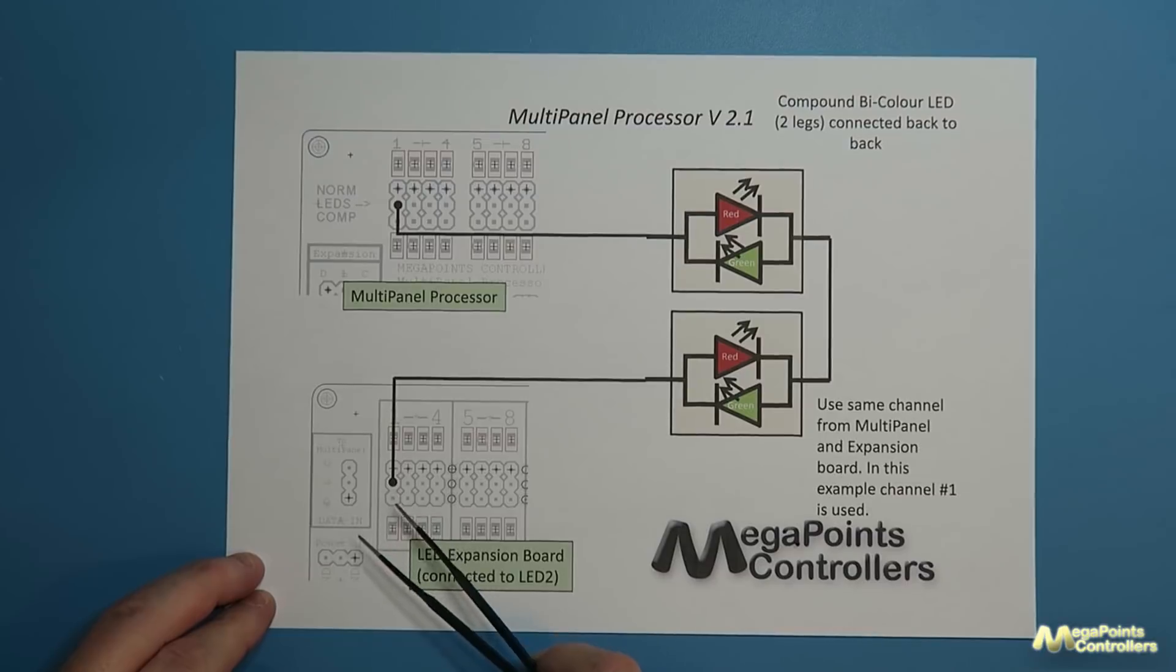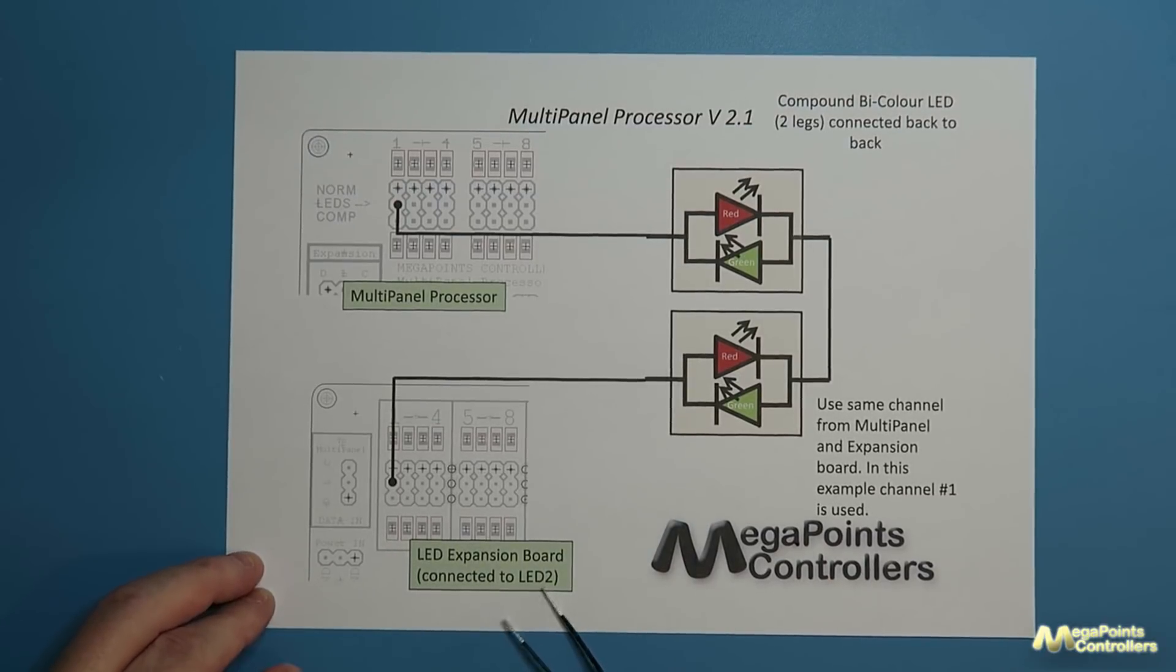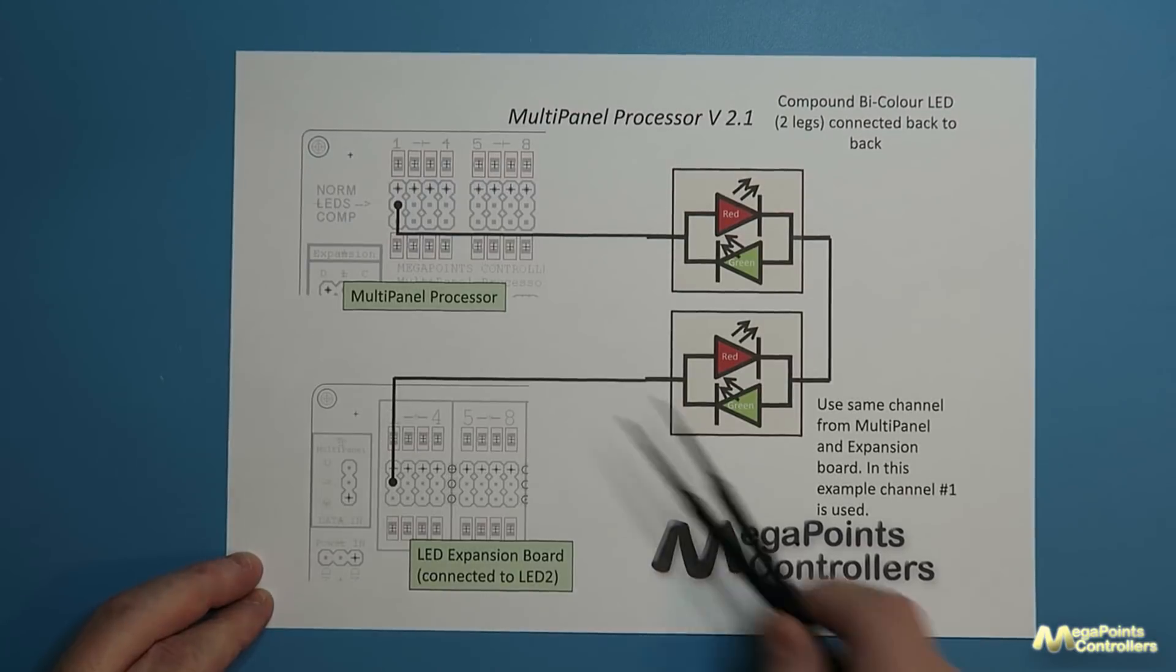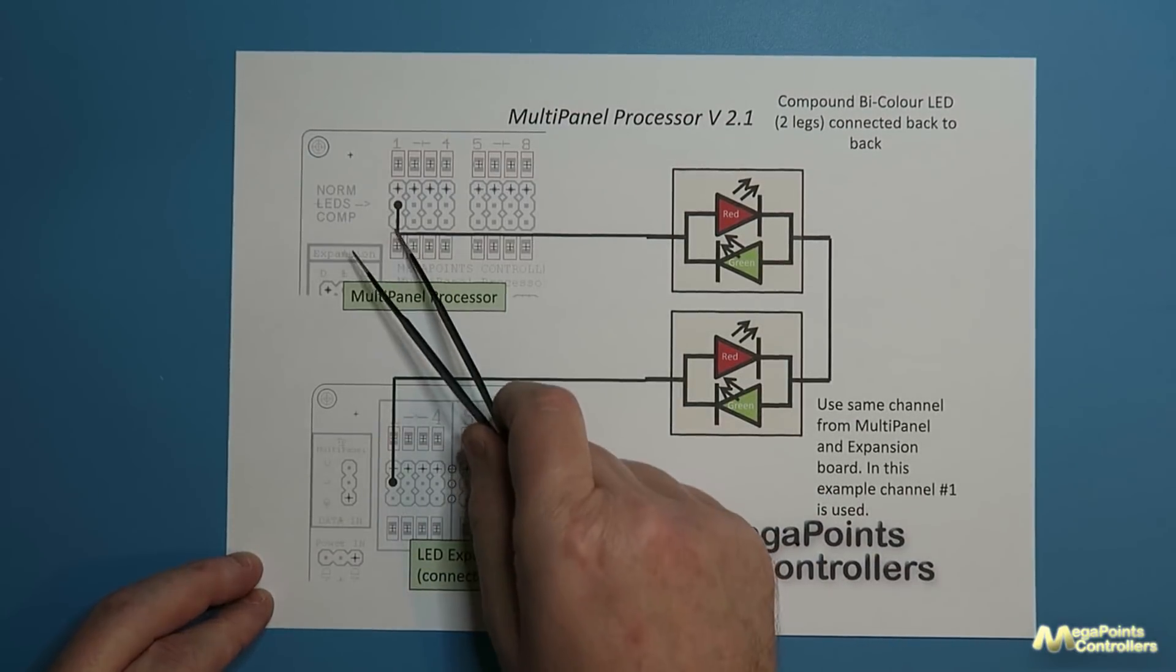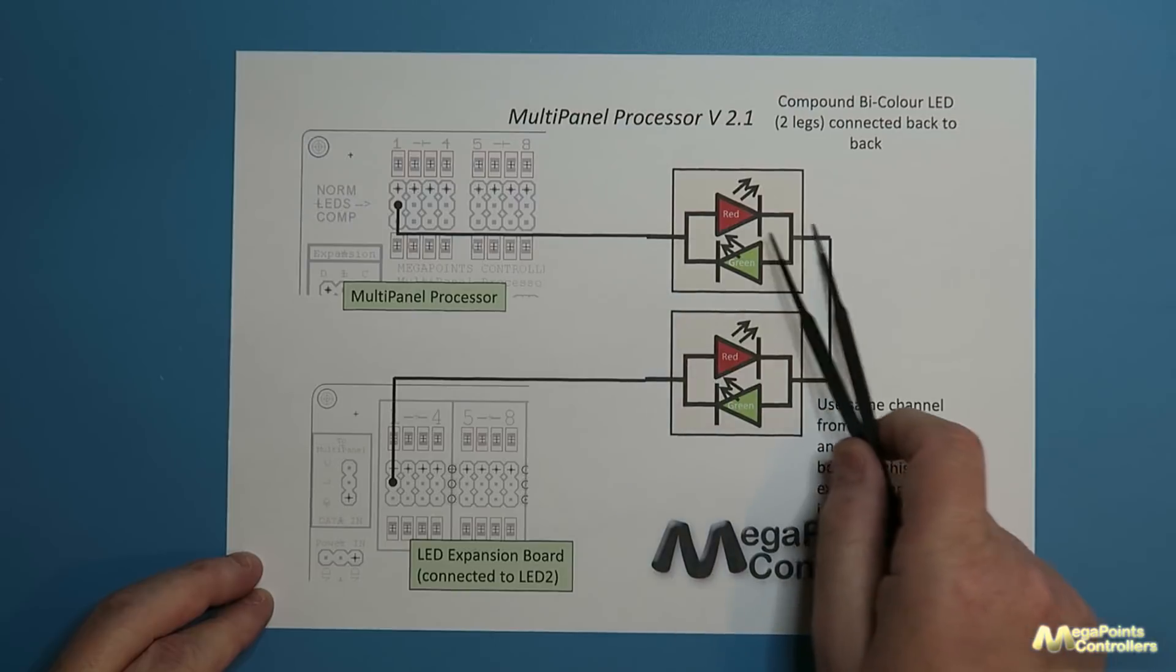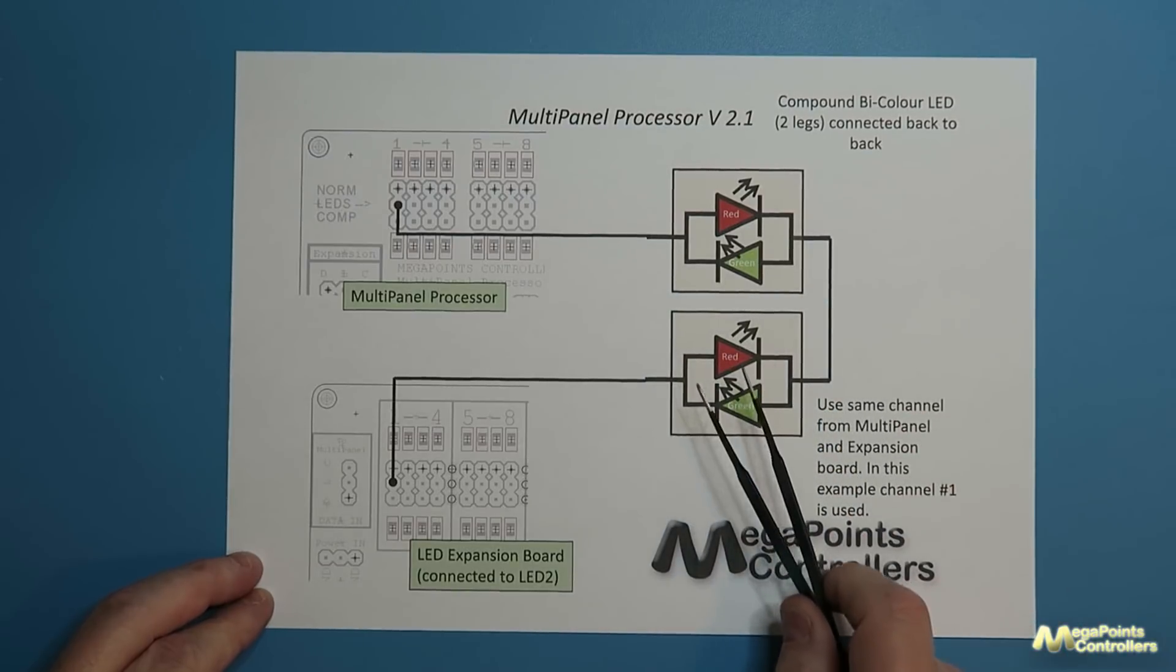The way these connect is to use again an LED expansion board connected to the LED two sockets on the multi-panel but because now we have only two leads we run one from the top connected in series with the second compound bi-color LED reversed and then into the LED expansion board.